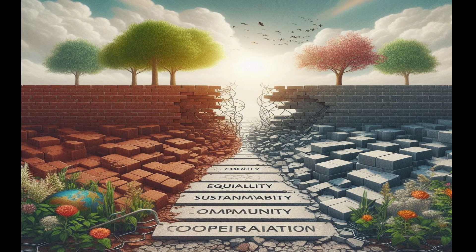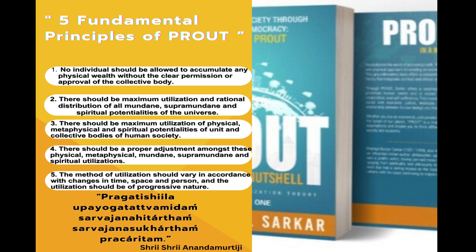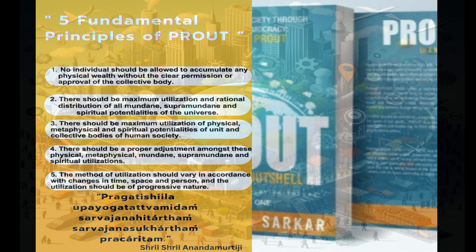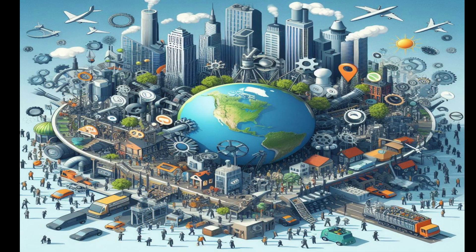Building a path beyond capitalism — navigating the journey to PROUT. PROUT, or the Progressive Utilization Theory, is a comprehensive socioeconomic model developed by Prabhat Ranjan Sarkar in the mid-20th century. It aims to address economic, social, and environmental issues through principles like decentralized planning, maximum utilization and rational distribution of resources, and ensuring the welfare of all individuals. While PROUT offers an intriguing alternative to capitalism, there are several reasons why it hasn't gained widespread acceptance or implementation.